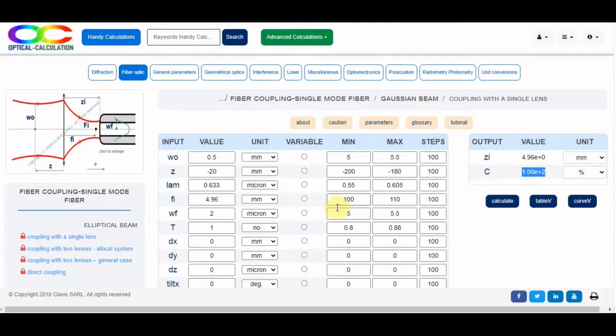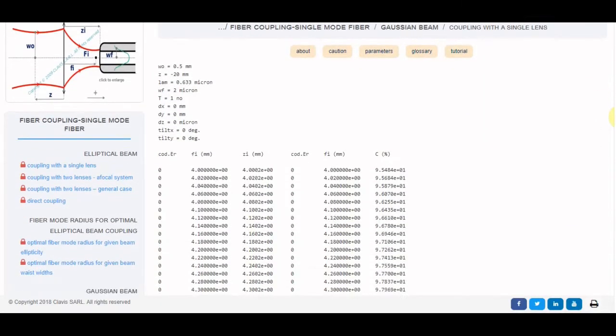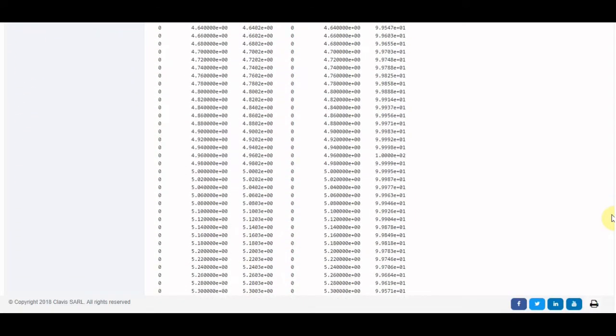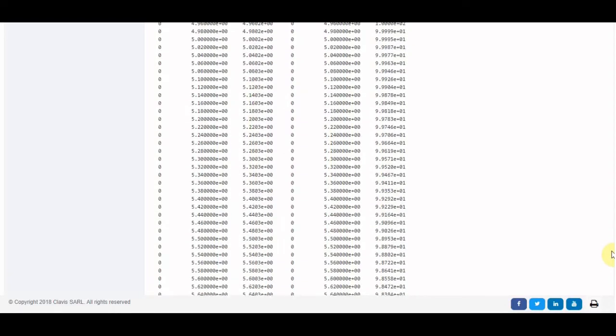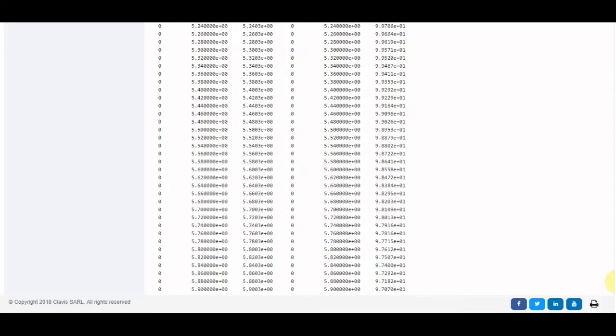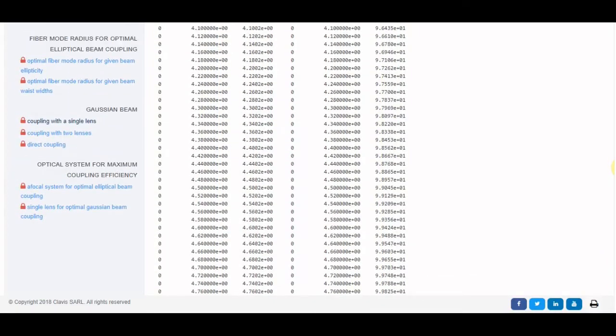Let's vary the focal length from 4 mm to 6 mm in order to check what is the sensitivity of the coupling efficiency on the focal length. The minimum value is 95%, so the sensitivity on the focal length is quite low. We can estimate that the focal length between 4 mm and 6 mm will not make a huge difference.